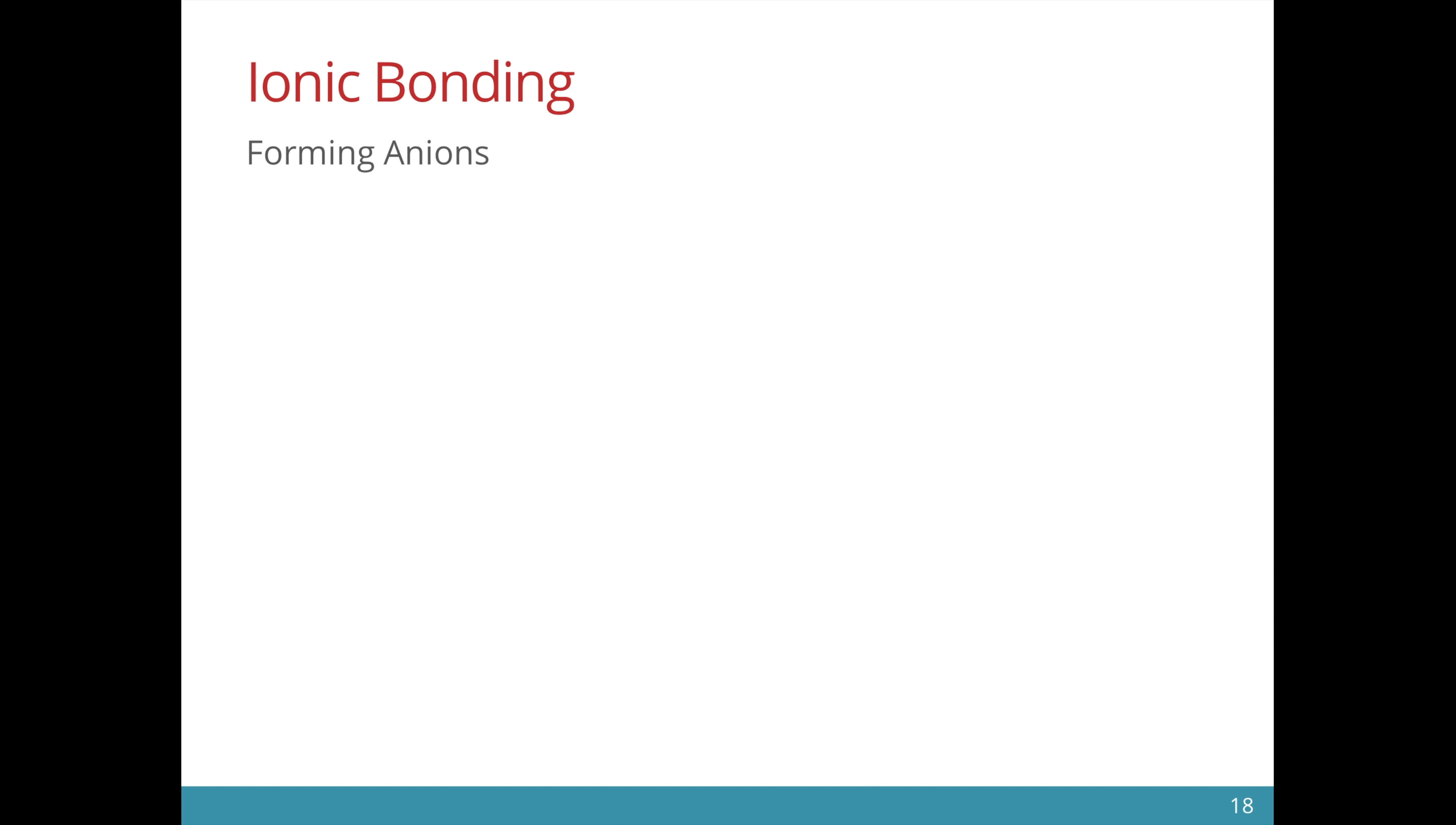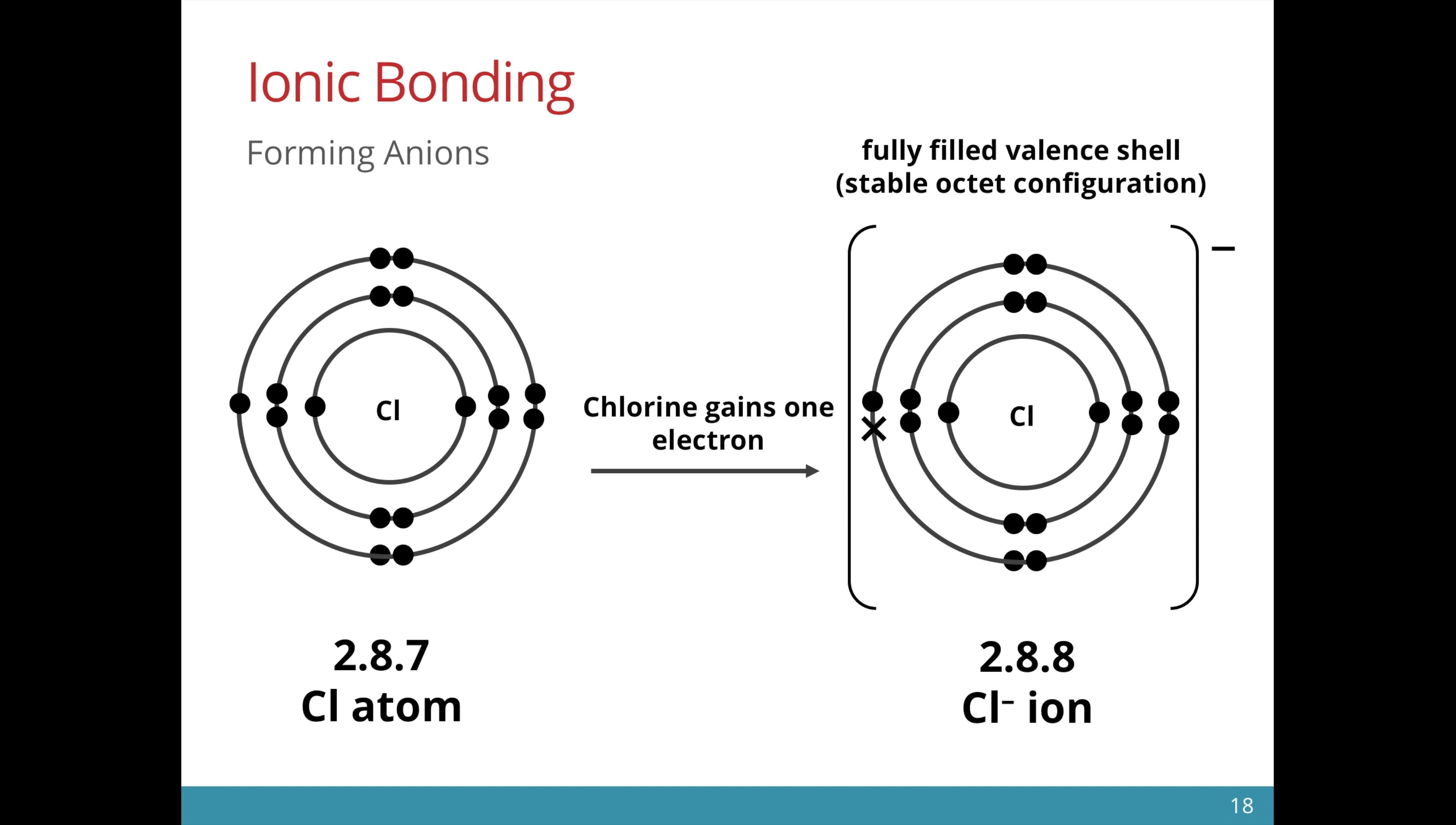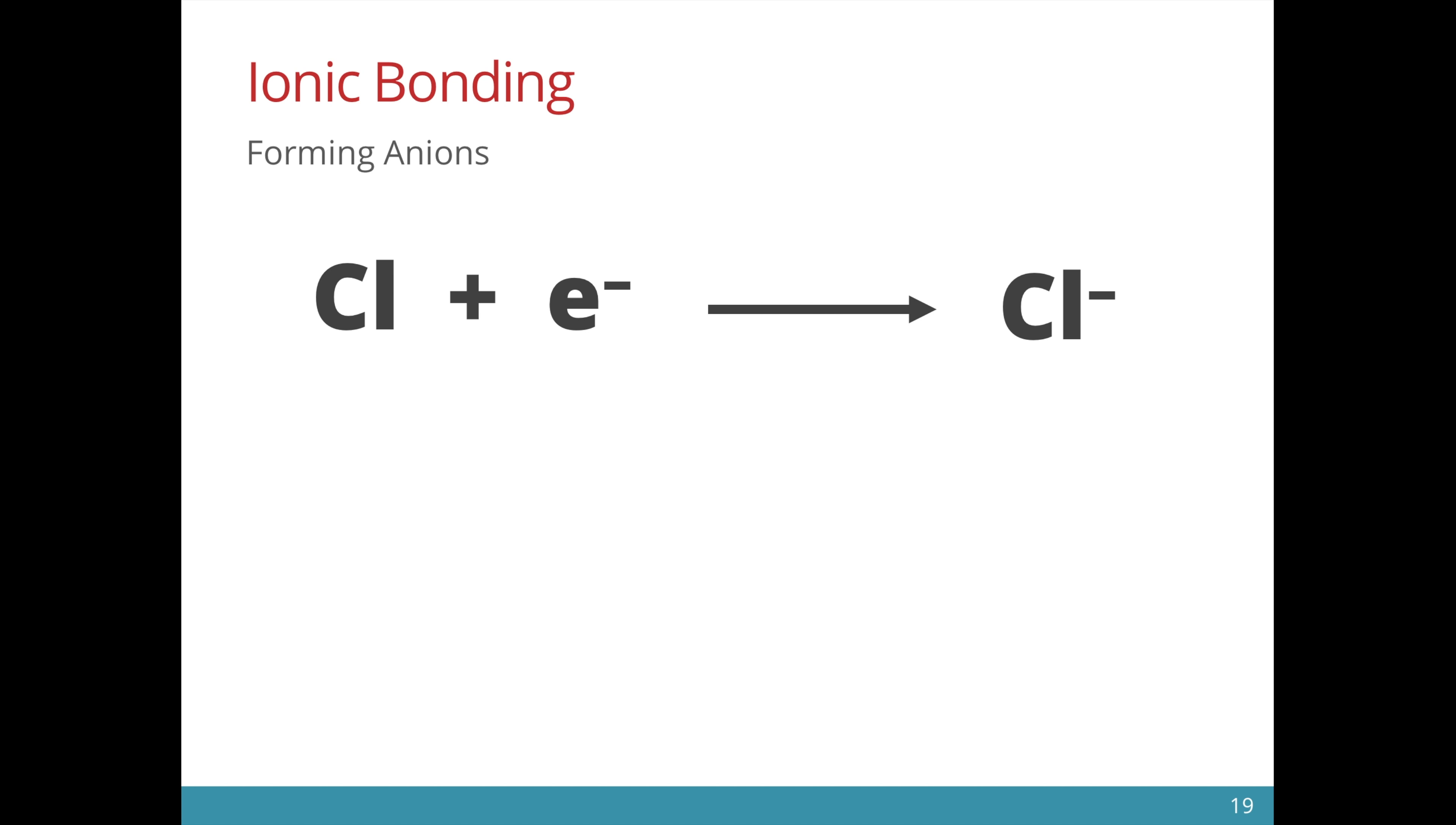What about anions? Let us take, for example, chlorine. Chlorine has this electronic configuration. It has 7 valence electrons. And instead of losing 7 electrons, it would be easier to just gain 1 electron to form the fully filled valence shell. Notice now that we represent the gained electron with a cross to show that it has come from another atom.